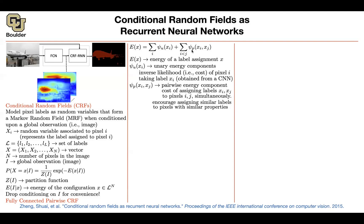The pairwise energy component ψ_p is something we design. We want it to encourage similar pixels to have similar labels. We look at hand-designed features for pixel i and pixel j — for instance, if two pixels are close to each other they should more likely share the same label. Also, if two pixels have similar colors in the original image, even if they are far apart, you encourage them to have the same label.